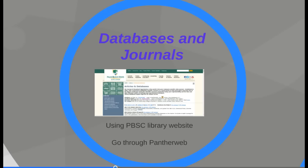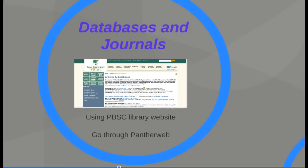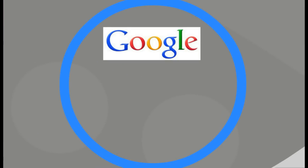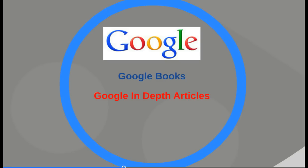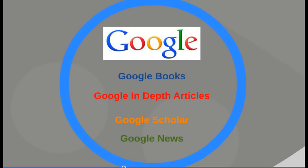Remember, the databases are where you can get journals, periodicals, and even things from books — journals are part of what's in the databases. So again, go through PantherWeb and click on the library. You can also use Google, specifically through different Google functions: Google Books, Google In-Depth Articles, Google Scholar, and Google News.